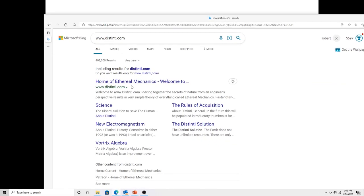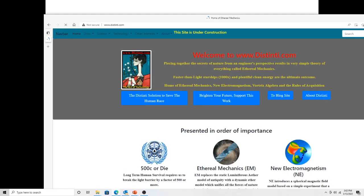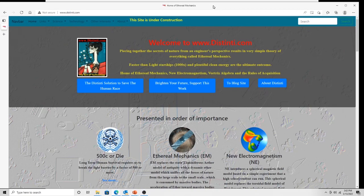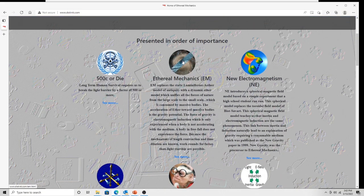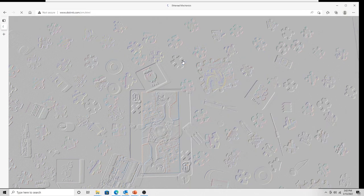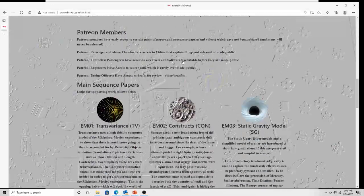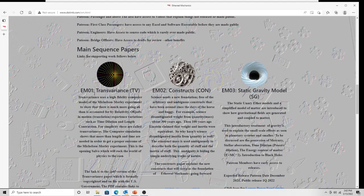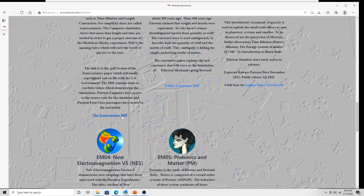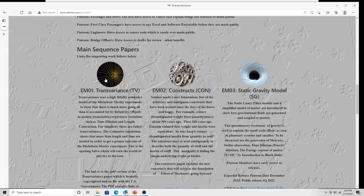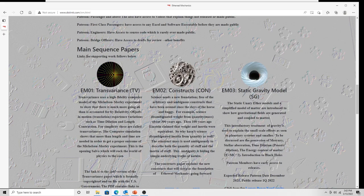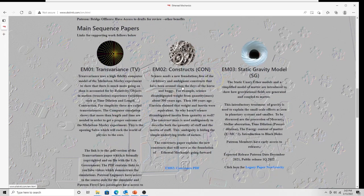For those who wish to get caught up, go to distinti.com. This is my website, it still needs a lot more work. Go to the Ethereal Mechanics link here - this will bring you to the Ethereal Mechanics page. We already have two papers out in the series: Ethereal Mechanics 01, which is Transvariance - this is a PDF paper available at the link with videos that support this on YouTube.